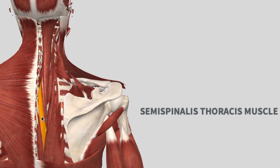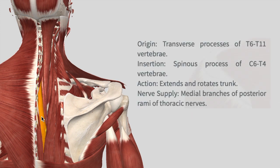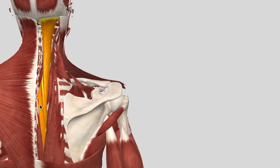Finally we have the semispinalis thoracis muscle. In the thoracis, the origin starts from T6 to T11 with insertion at C6 to T4, and the action is to extend and rotate the trunk. The nerve supply is the medial branch of the posterior rami of thoracic nerves. So there are three semispinalis muscles: capitis, cervicis, and thoracis. Pause the video and make sure you are familiarized with all three.